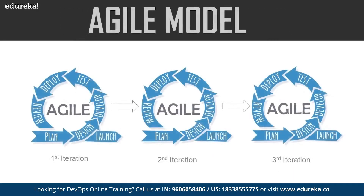The next model is the agile model. In this model, the software is broken down into various iterations. Each iteration has various phases such as planning, design, development, and so on. The duration of each iteration is generally two to eight weeks. In the agile model, you release the software in the first iteration, then gather feedback from end users or customers and incorporate those changes into the second iteration, then release again. You repeat the same procedure for the third iteration and so on.